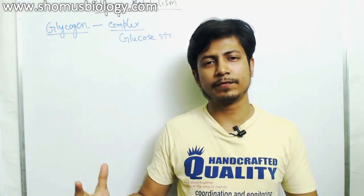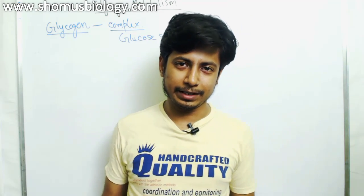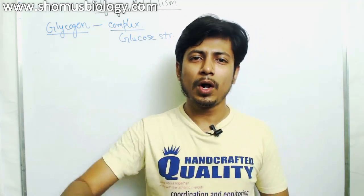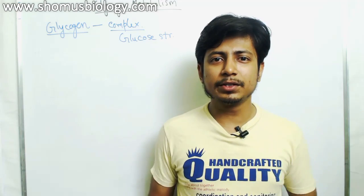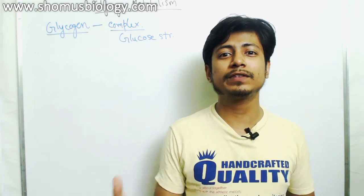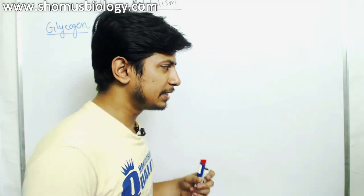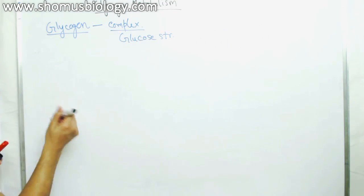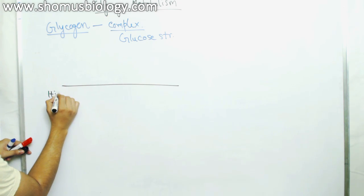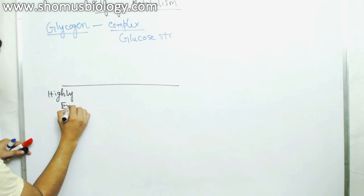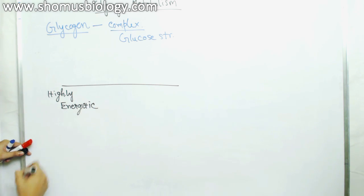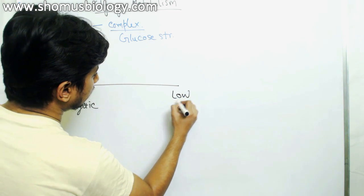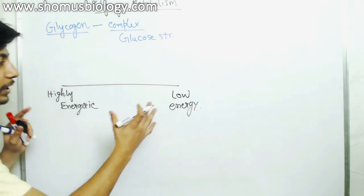If you look at our lifestyle, we eat food, digest it, and the broken-down products of carbohydrate are present in our body cells. But we don't always need to break all of them down to produce energy. We can divide our body's energy status into two parts: a highly energetic state and a low energy state.